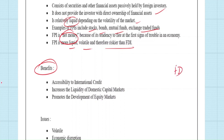FDI helps with investment, establishment of companies, and manufacturing setups. FPI also has its own role to play: it provides accessibility to international credit, increases liquidity of domestic capital markets, and promotes development of equity markets, especially stock markets. The negative aspects include volatility — it is hot money — and economic disruption. An enemy country can economically manipulate another country with FPI. If not handled properly, it can cause manipulation of trade and investment processes in the stock market.